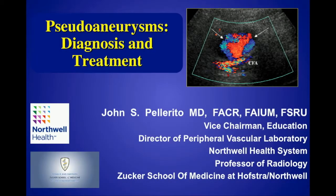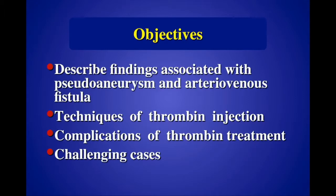I'm John Pellerito and I'm going to talk about the diagnosis and treatment of pseudoaneurysms and arteriovenous fistulas. For the next few minutes I'm going to describe the findings associated with these two entities that usually occur after femoral artery injuries. We'll talk about thrombin injection for treatment of pseudoaneurysms and some of the complications that can arise, and I'm going to finish up by showing some challenging cases.